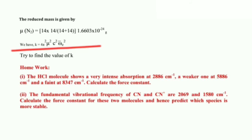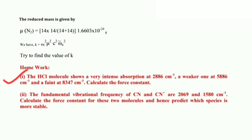Calculate the force constant k using the relation: k = 4π² × mu² × c² × omega_e_bar². For homework, problem one: the HCl molecule shows a very intense absorption at 2886 cm⁻¹, a weaker one at 5886 cm⁻¹, and a faint one at 8347 cm⁻¹. Calculate the force constant. The intense line is the fundamental, the weaker one is the first overtone, and the faint one is the second overtone — solve it just like the previous problem.